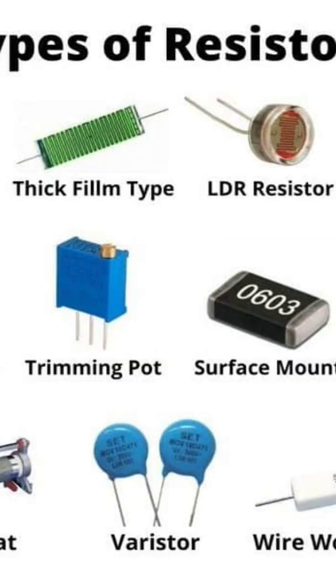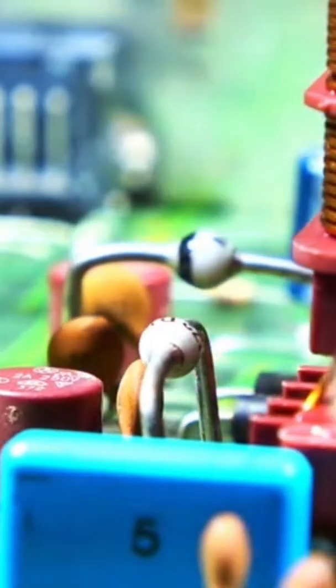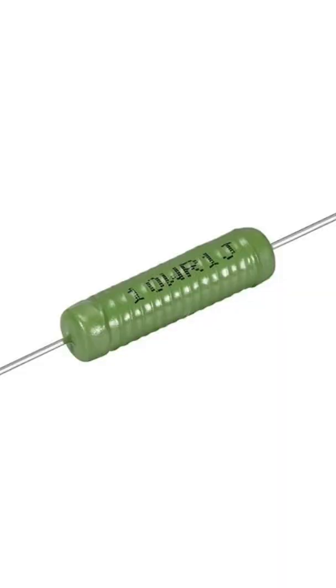Modern technology has made resistors very small and precise. Traditional axial resistors use color bands to indicate resistance values, while SMD (surface mount device) resistors are compact components widely used in printed circuit boards, PCBs.